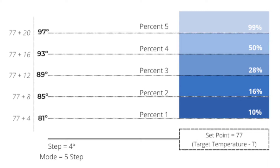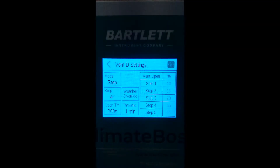Four more degrees will open to step three, 28 percent; four more to step four, or 50 percent; and four more and the vent will open completely to 99 percent. Five step mode is a good mode if you want to control each step percentage.